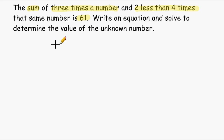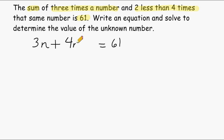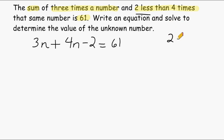We know we are adding two things together and that is going to equal sixty-one. The first thing we are adding is three times a number, which can be written as 3n. The second thing we are adding is two less than four times that same number, which is written as 4n minus two. Notice I wrote minus two after four times a number, even though it said two less first — because two less means you have to take it away from something. You have to write whatever that thing is first. Because it is two less than four times a number, that means 4n minus two. A lot of people automatically want to write two first and then minus, but that would be incorrect — you have to ask yourself, two less than what?